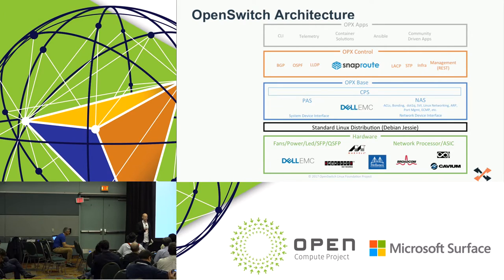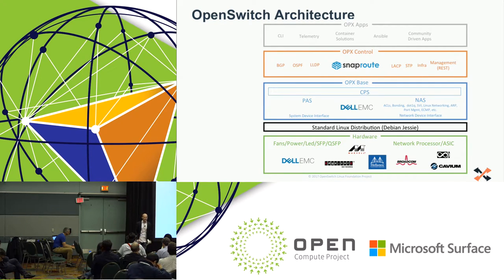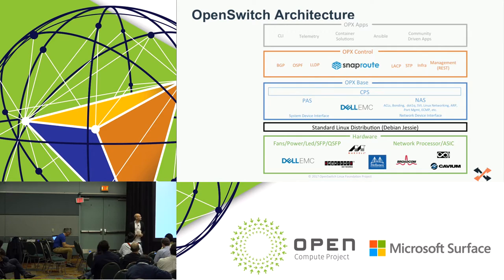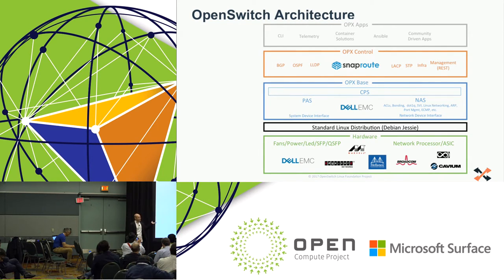SnapRoute has also provided REST interfaces and documentation about how to program all of the routes or other protocol aspects. On top of the OPX control, we have the OPX application ecosystem, which is being developed as we speak. We're working to build an ecosystem of partners, and you'll be seeing solutions very soon such as Kubernetes integration. In the application ecosystem, you also have things like Ansible playbooks — you can use standard Linux Ansible playbooks because we support standard Linux networking.